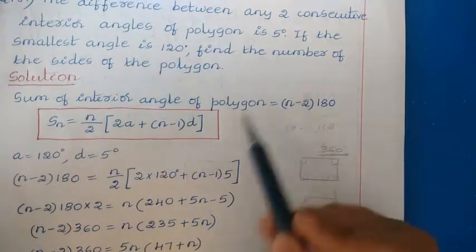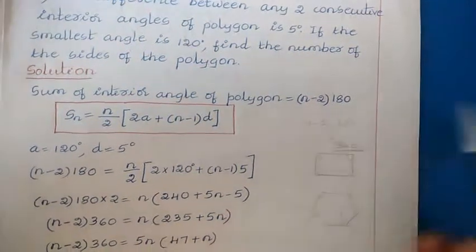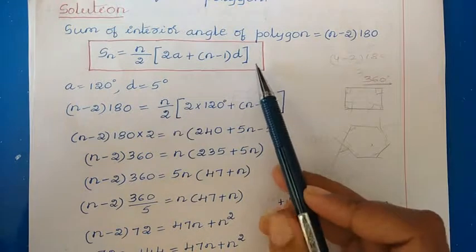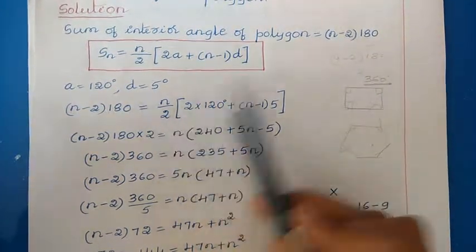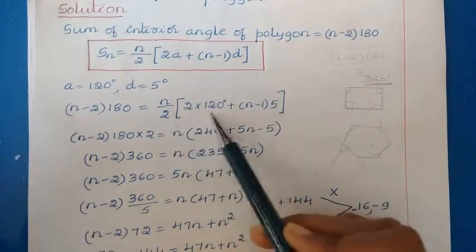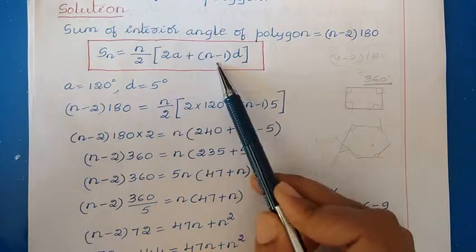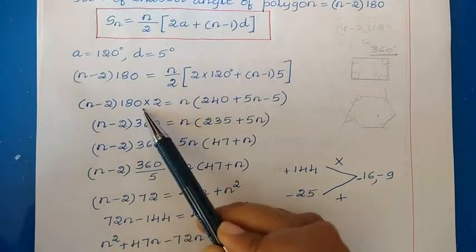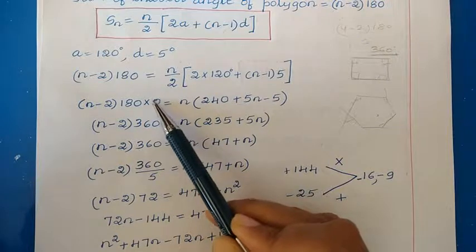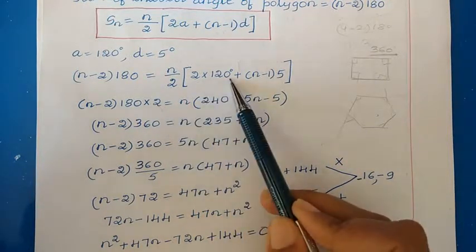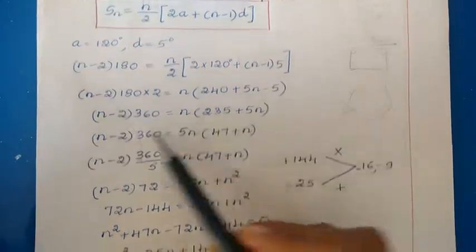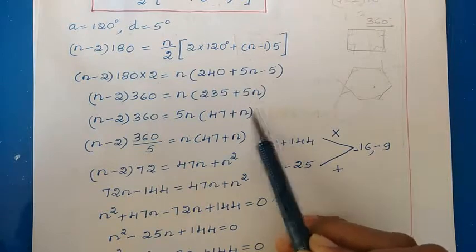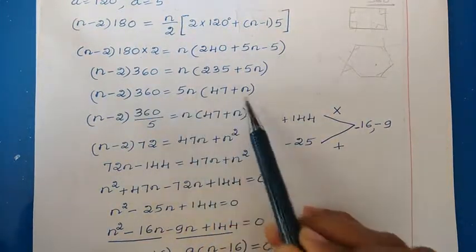Equating: (N−2)×180 = (N/2)×[2×120 + (N−1)×5]. Multiplying both sides by 2: (N−2)×360 = N×[240 + 5(N−1)] = N×(235 + 5N). Dividing both sides by 5: (N−2)×72 = N×(47 + N).